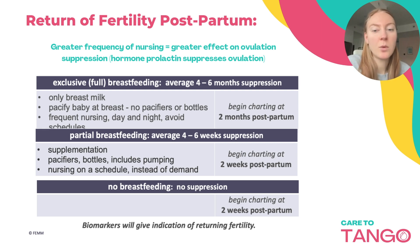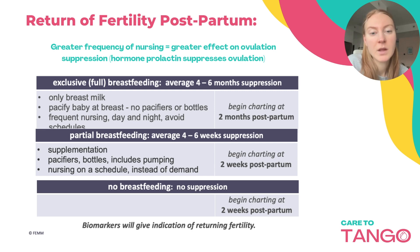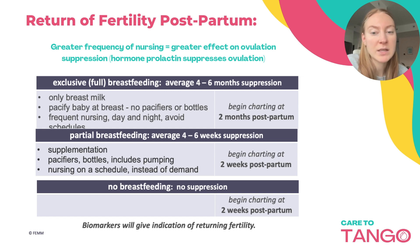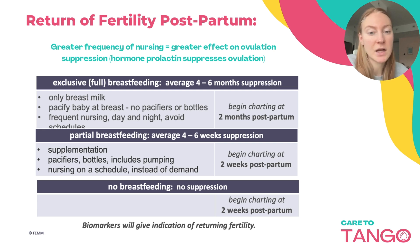If you look at the chart below, we can see that if you are exclusively and fully breastfeeding, the return of ovulation can occur on average at four to six months, and you should start charting at two months postpartum. This would include things like only breastfeeding, pacifying the baby at breast — so no pacifiers or bottles — and then frequent nursing day and night while avoiding schedules.